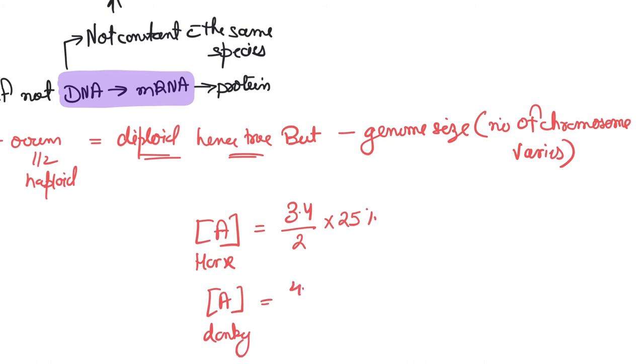For donkey we calculate 4.1/2 × 20. Why are we dividing it by 2? Because diploid to haploid. Why multiplying? Because that's the adenine content. You do the math, it comes around.